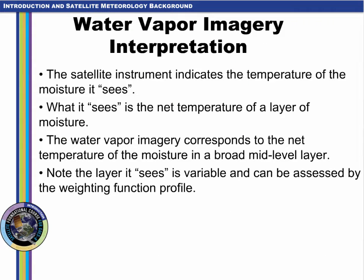When interpreting water vapor imagery, remember the satellite instrument indicates the temperature or the moisture it sees. What it sees is the net temperature of a layer of moisture. The water vapor imagery corresponds to the net temperature of the moisture in a broad mid-level layer, and note that the layer it sees is variable and can be assessed by the weighting function profile.